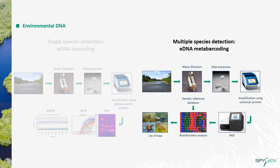For the second approach, the amplification strategy is different. Instead of species-specific primers, we use universal primers specific for a taxonomic group such as fish, amphibians, or mammals. The amplification product is then sequenced using next-generation sequencing technology, and the sequences obtained are compared to a reference database. At the end, we have a list of taxa present in the location.